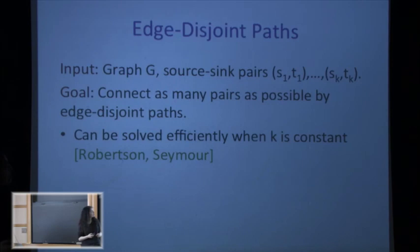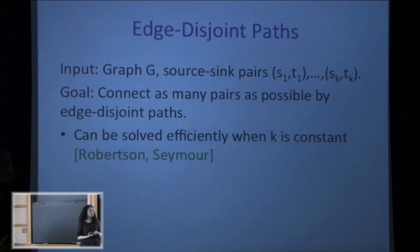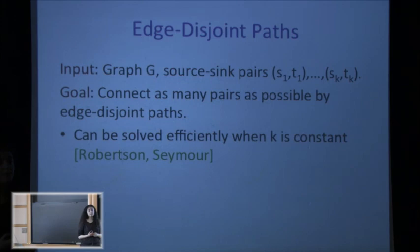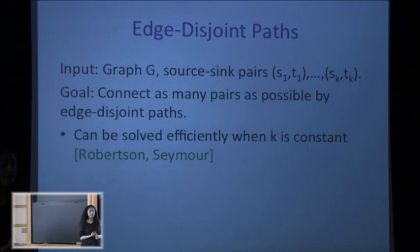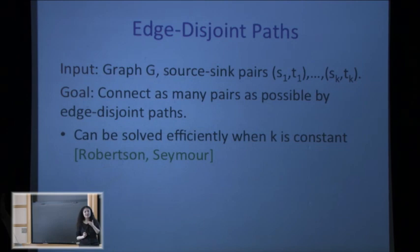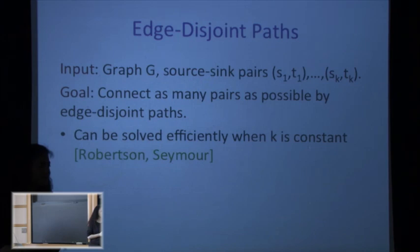Specifically, let's look at the edge-disjoint paths problem: given a graph G and a collection of source-sink pairs (s_1,t_1), …, (s_k,t_k), you want to connect s_i to t_i with a path for every pair, but the paths must be edge-disjoint. Since you may not be able to route all of them, you want to route as many as possible. In the node-disjoint version the paths must be vertex-disjoint. When k is a constant this is solvable — Robertson and Seymour showed this as part of their graph minor theory.